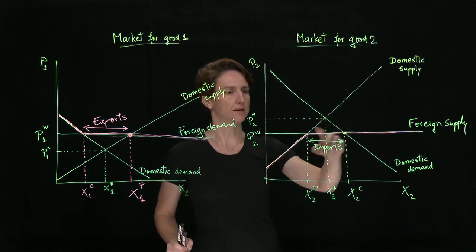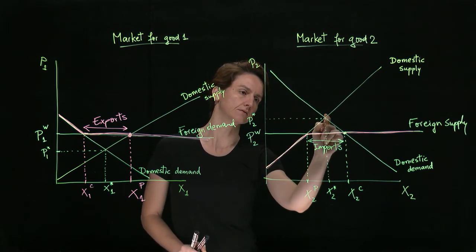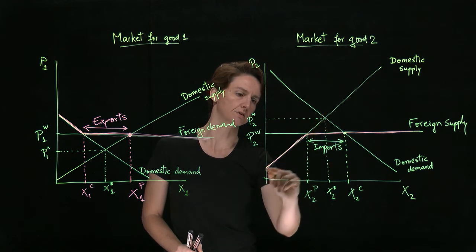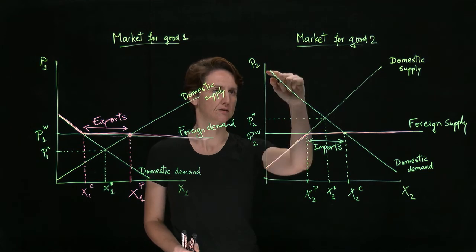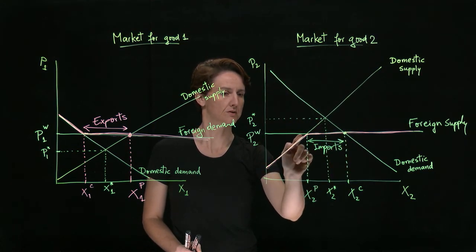So if you compare surplus before trade, summed up over consumers and producers, it formed this triangle. So with trade, total surplus combines consumer surplus and producer surplus.